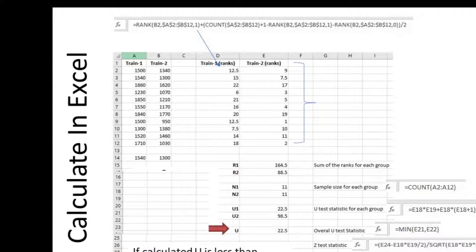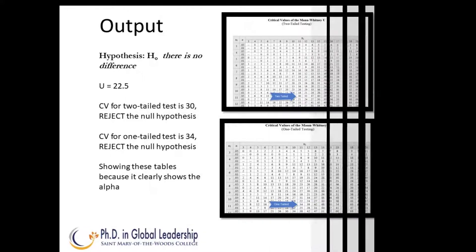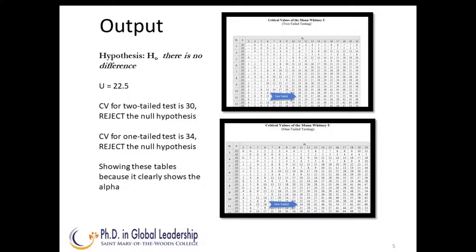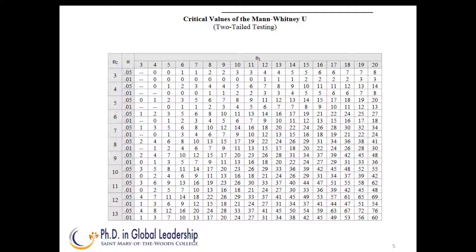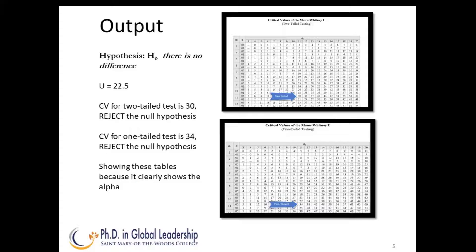Let's look at the U-test statistic of 22.5. To determine if the calculated U is significant, we must look at the critical value table for a two-tailed test. At 11 and 11, the critical value in a two-tailed test is 30. The calculated U is significant if it is less than or equal to the table value. Our calculated U is 22.5, and that is less than 30.